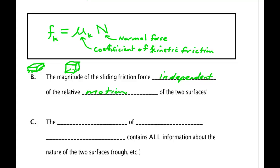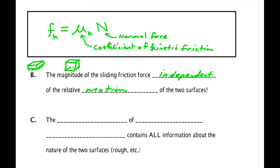An interesting question is: does it make a difference what the surfaces are made of — for instance, sliding rough sandpaper across a block versus pushing the block across ice? The answer is yes, and that information is all contained in mu. The coefficient of kinetic friction contains all the information about the nature of the two surfaces: how rough they are, what they're made of, and so forth.